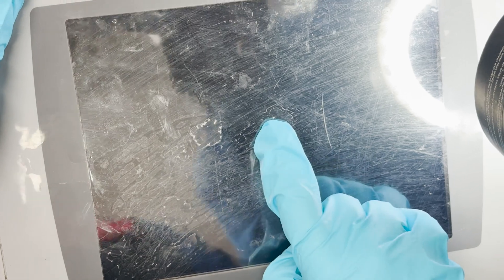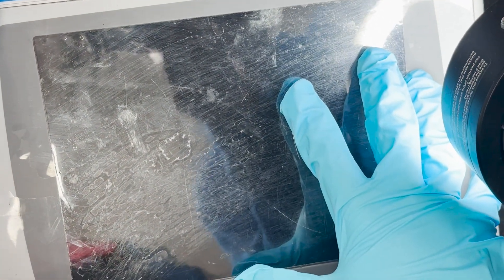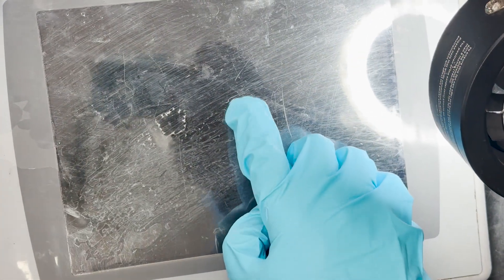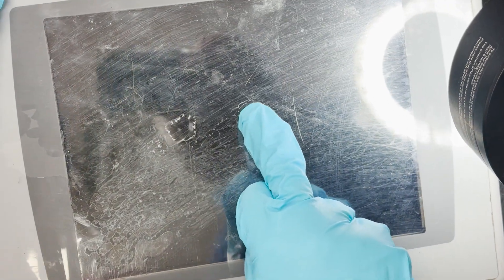Upon initial inspection, we observe several areas where water has penetrated beneath the screen overlay. The water damage is evident from the visible water bubbles trapped behind the front panel.